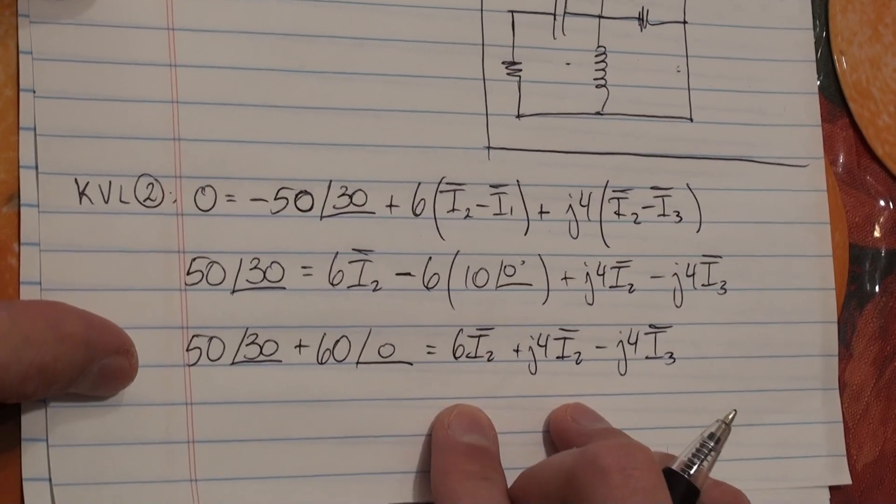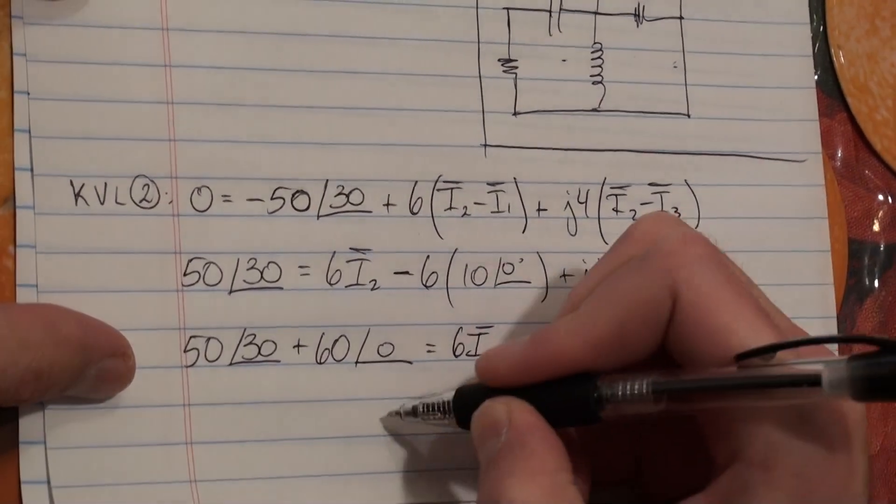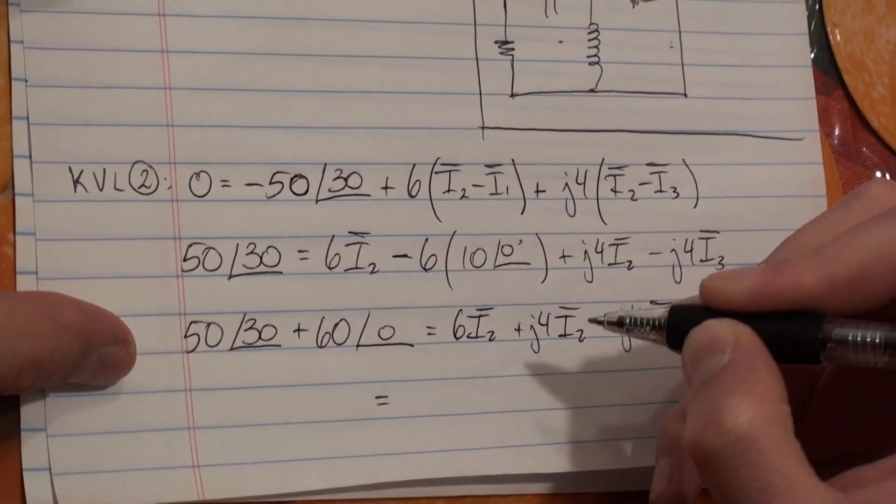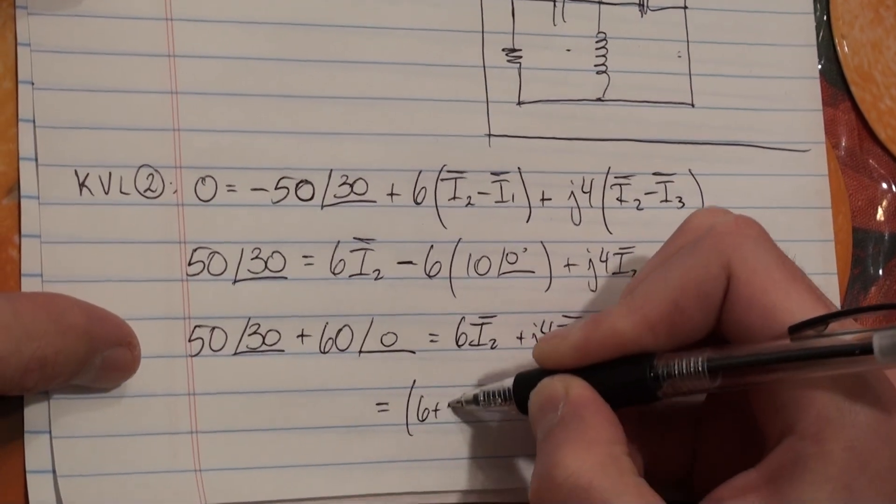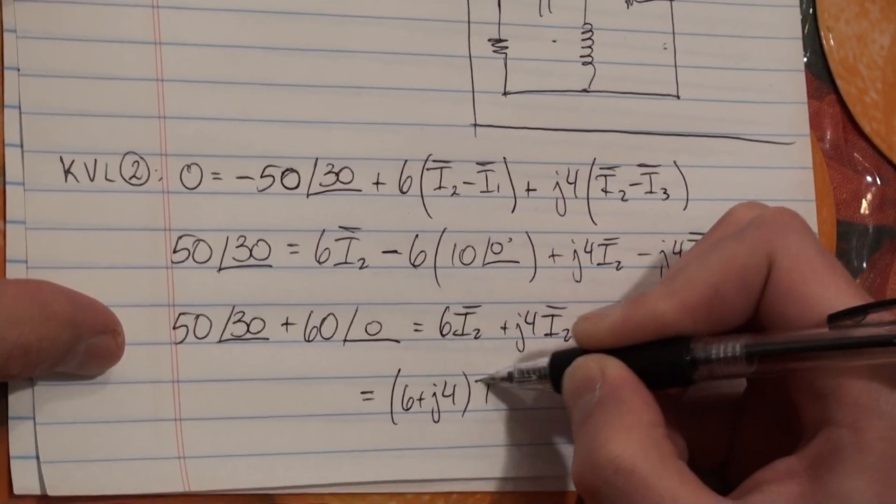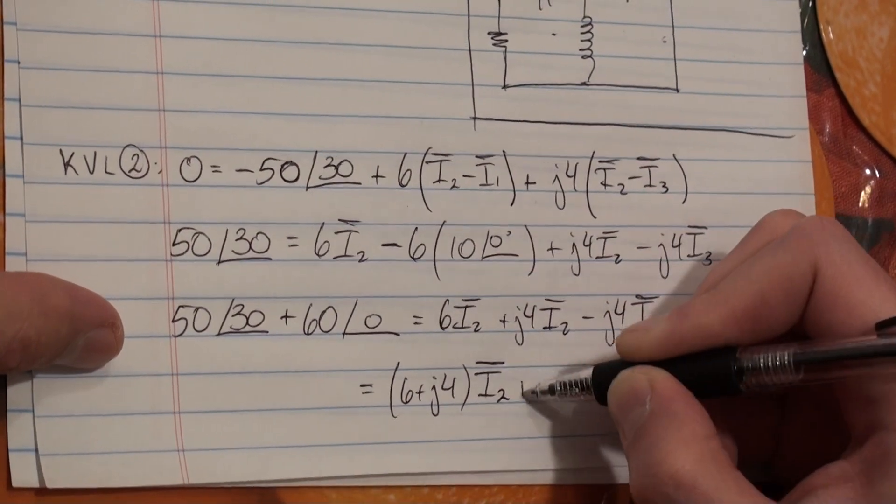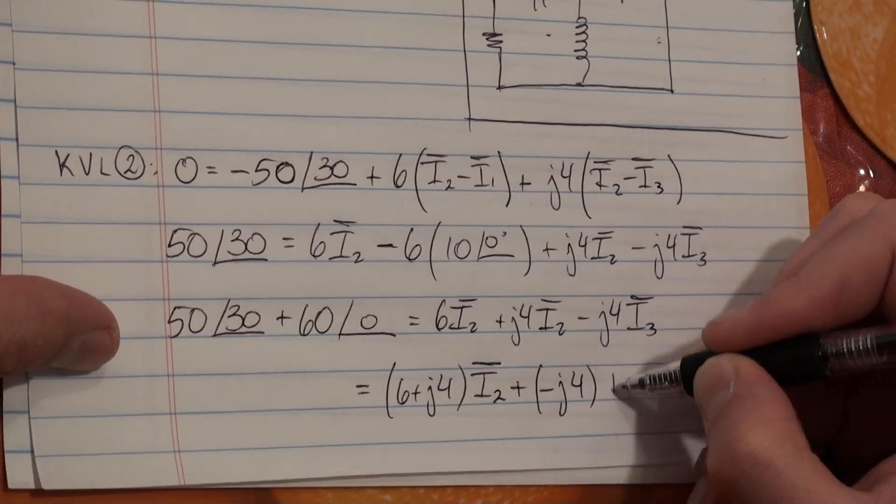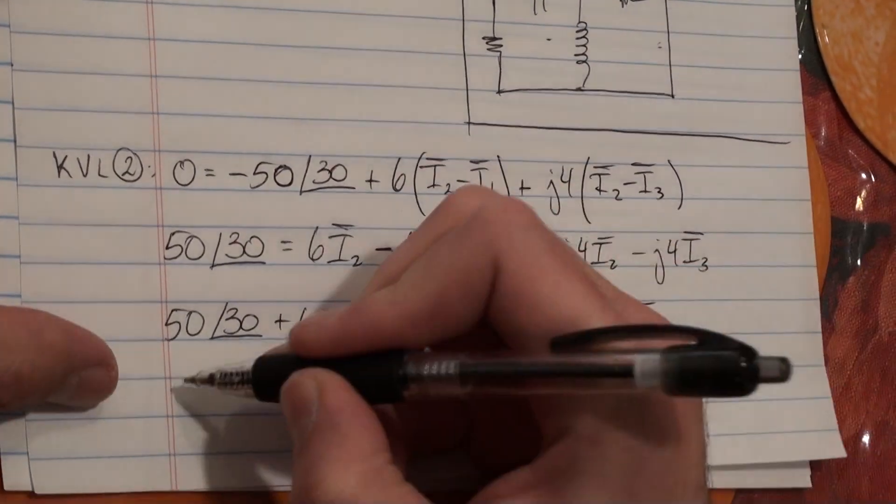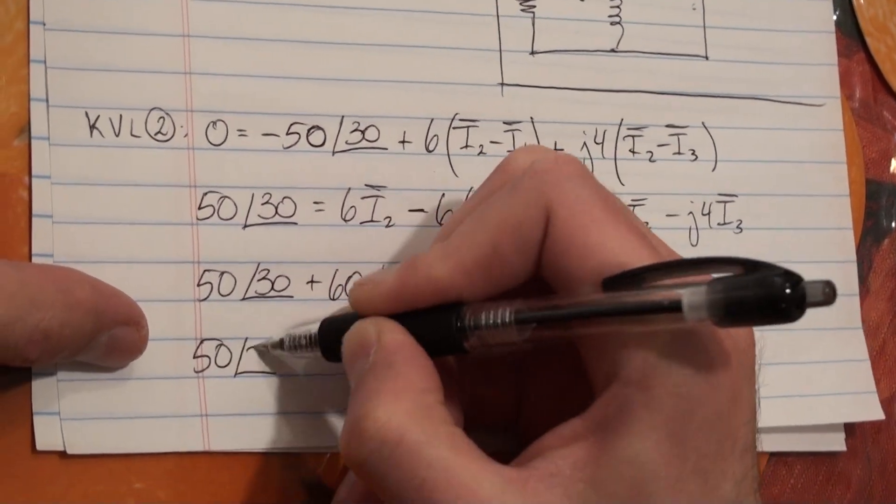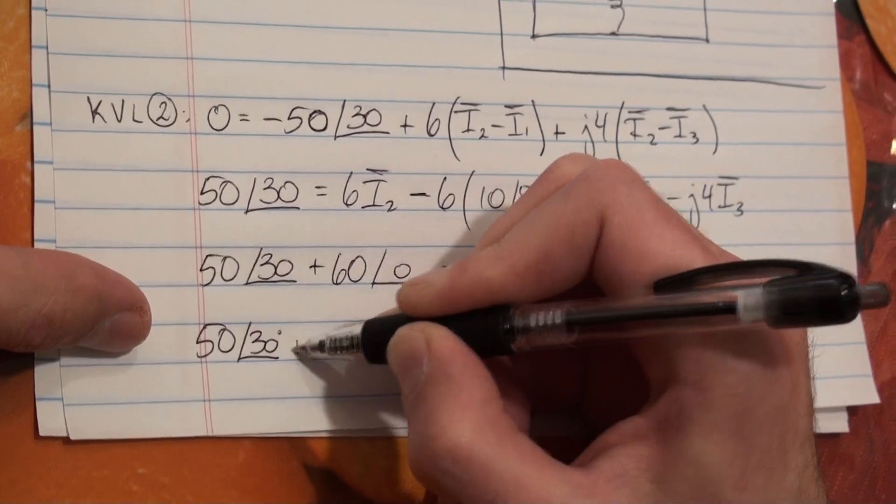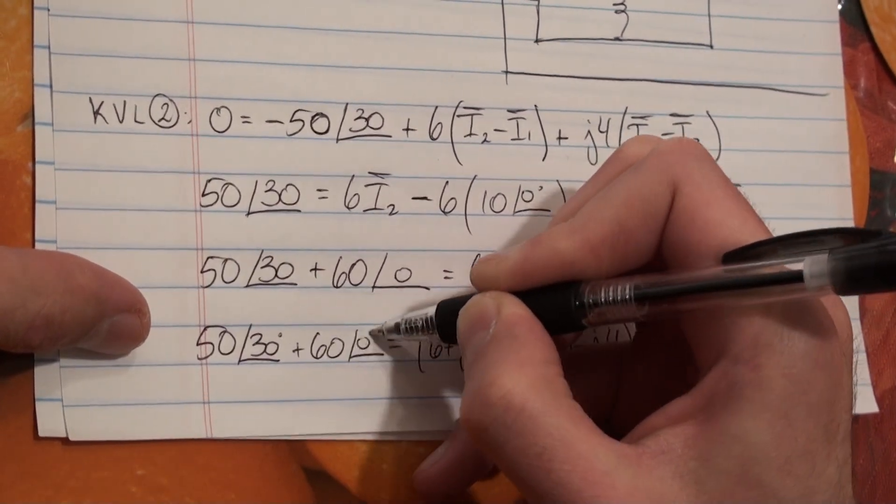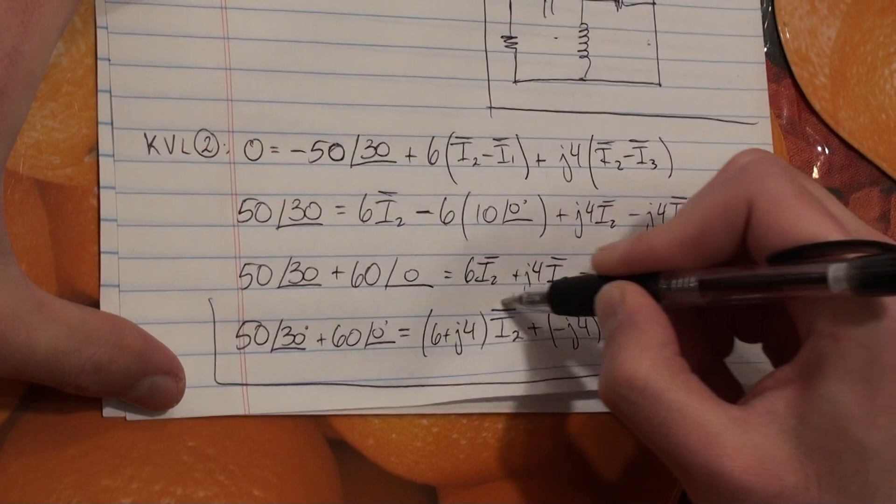So this is going to become 60 at an angle of 0. We can move it to the other side. So we get 50 angle 30 plus 60 at an angle of 0 equals 6I2 plus J4 I2 minus J4 I3. So we can collect common terms, and we're left with 6 plus J4 I2 plus minus J4 I3. And this whole thing is going to be equal to 50 at an angle of 30 degrees plus 60 at an angle of 0 degrees. And this is your first equation.